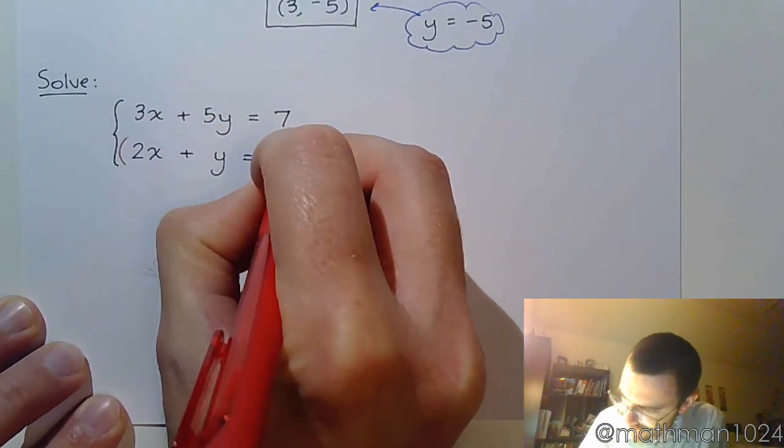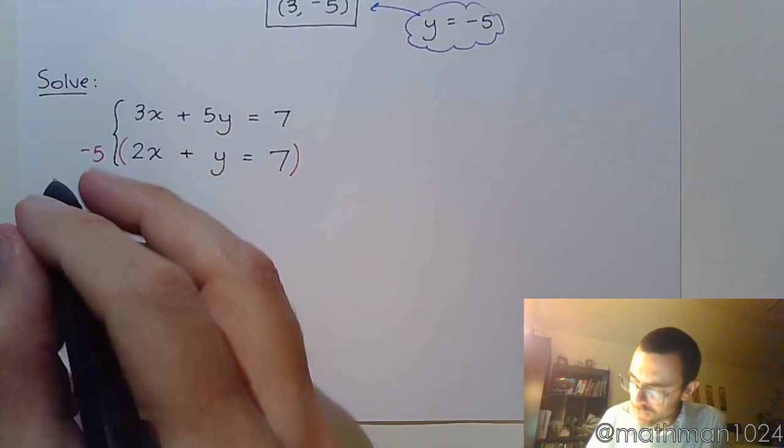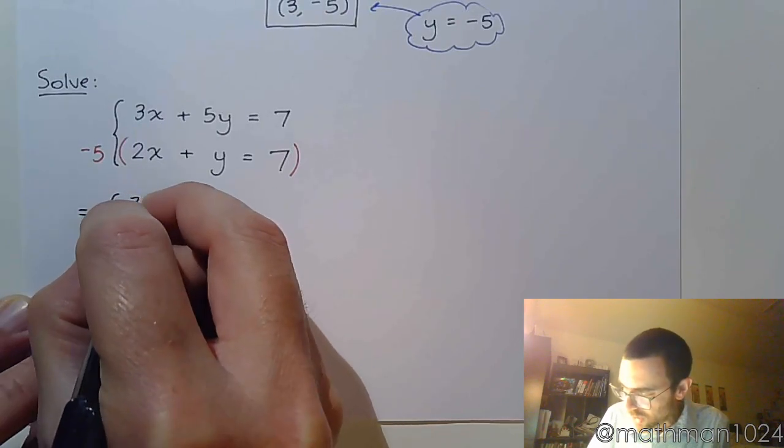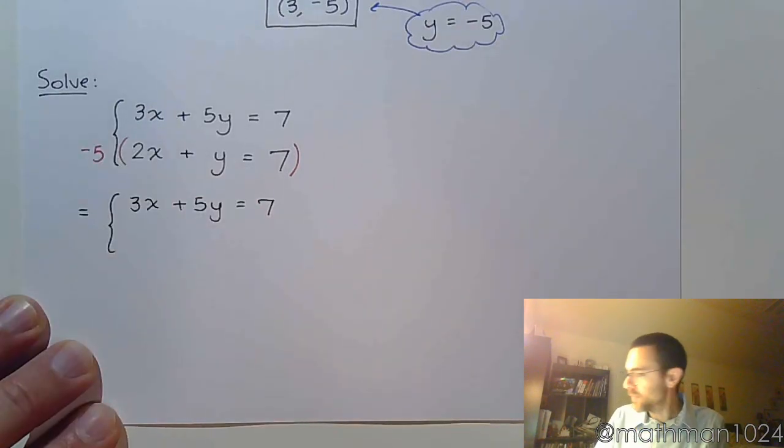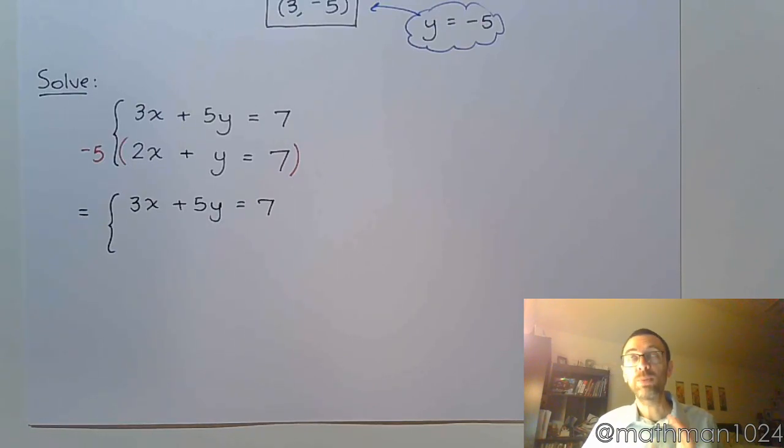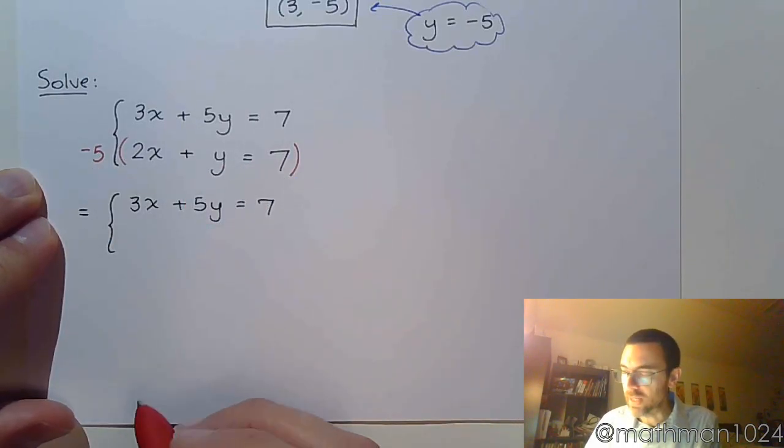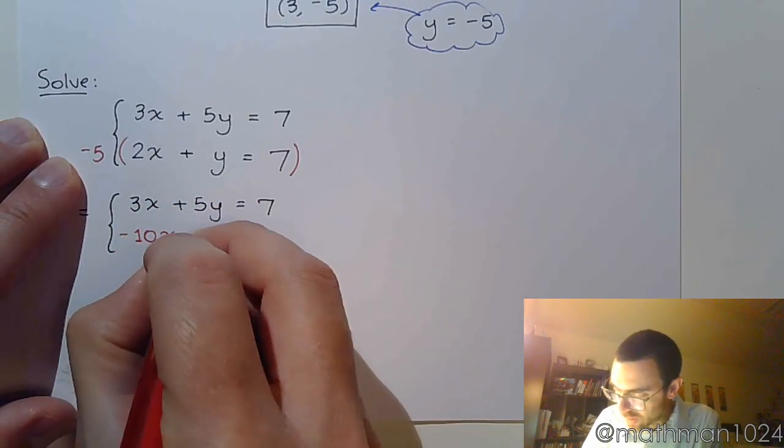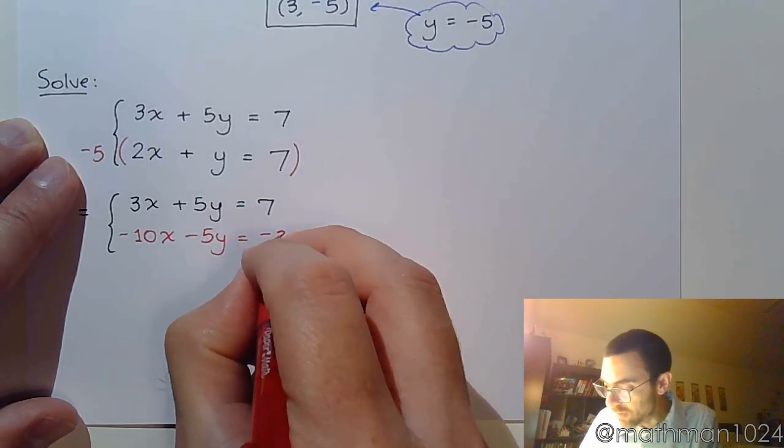So I'm going to multiply both sides of this equation by negative 5. I want you to see what happens. So the first equation doesn't change. It stays as 3x plus 5y is equal to 7. I'm using the multiplication property of equality to multiply both the left and the right sides by negative 5. So make sure you distribute correctly. This gives me negative 10x, negative 5y equals, don't forget about the right side, negative 35.